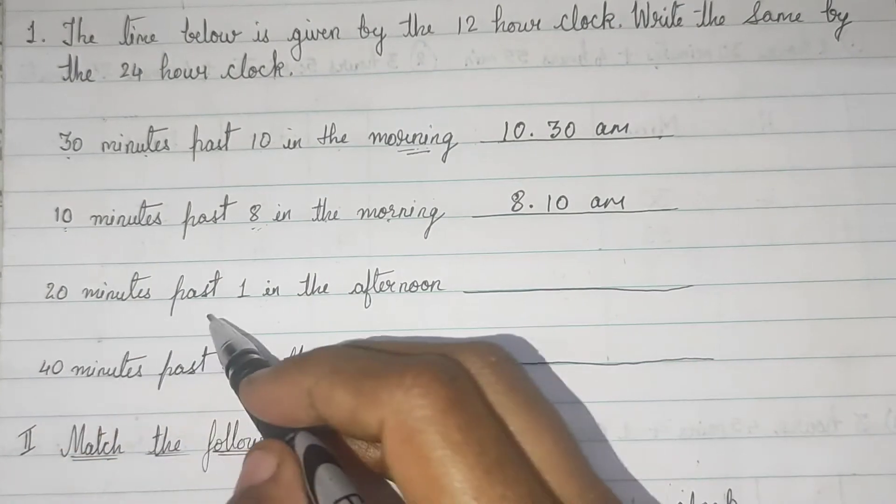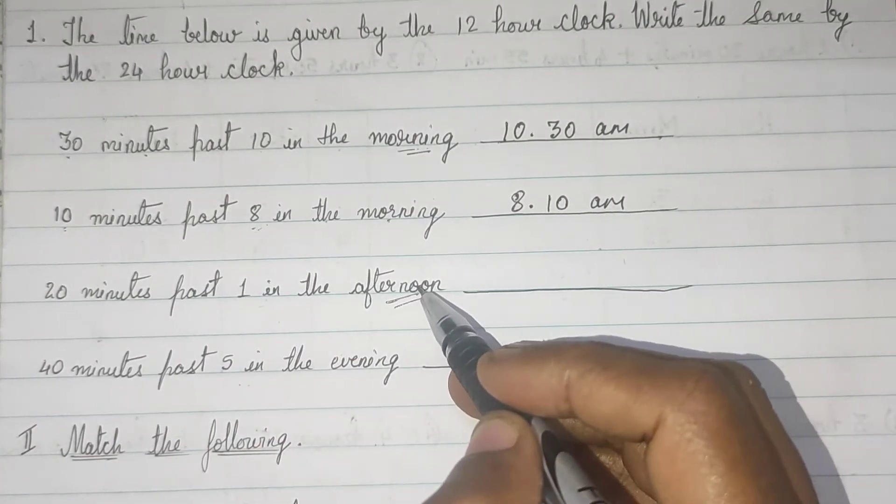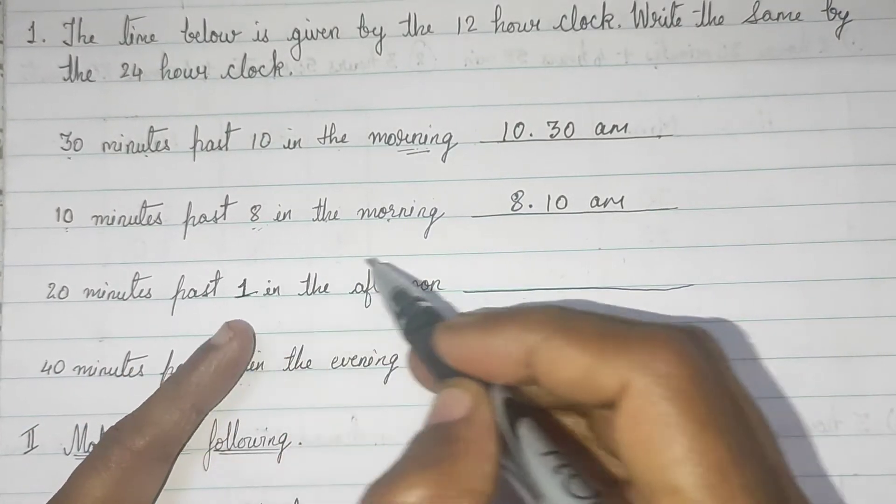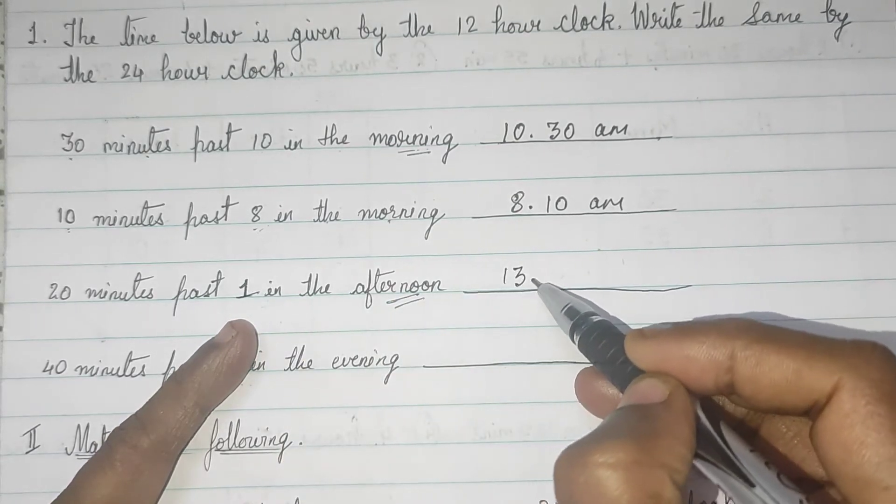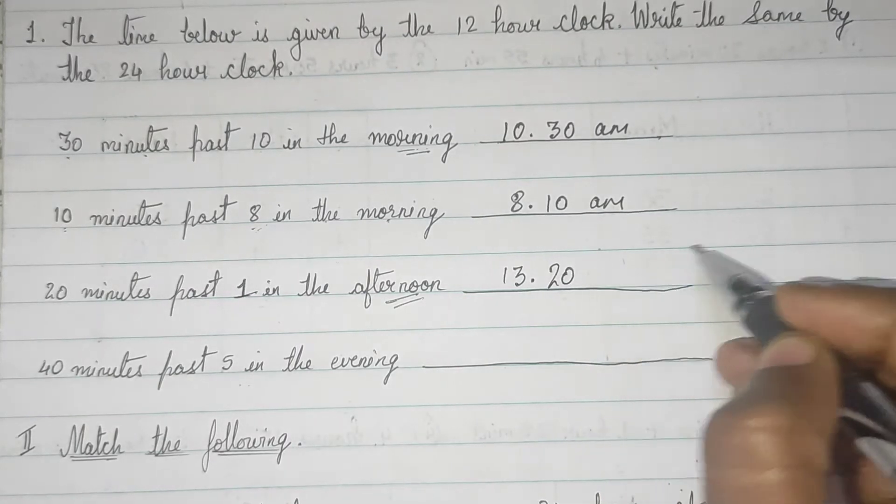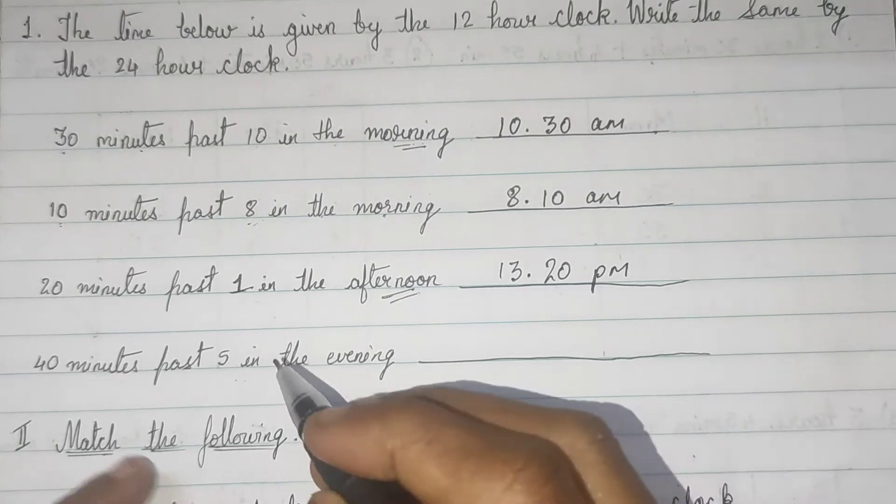Now, 20 minutes past 1 in the afternoon. Now, what they are saying? So, it is like 13. And how many minutes past? 20 minutes. Okay? Yeah, you have to write p.m.